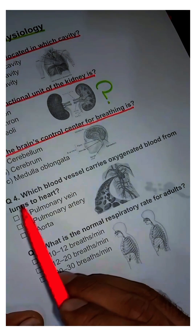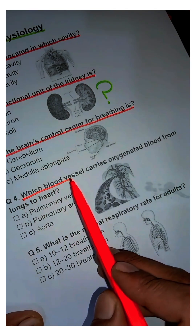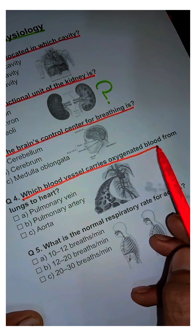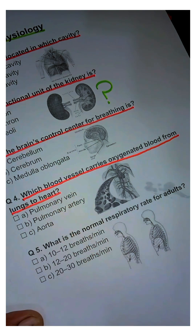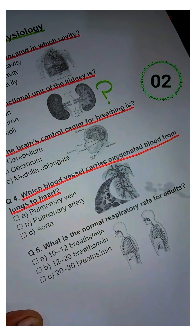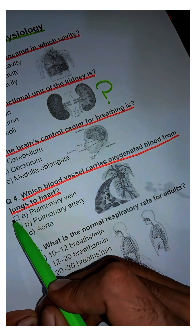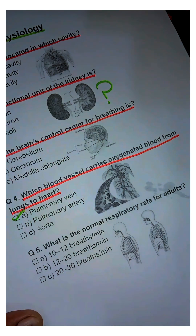Question 4. Which blood vessel carries oxygenated blood from the lungs to the heart? Answer: A. Pulmonary vein.